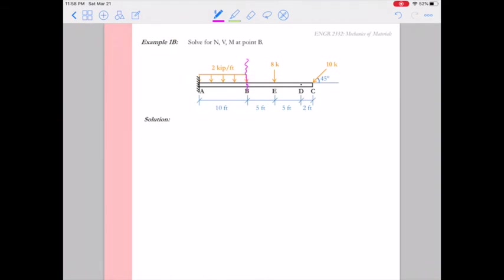So we're going to start just like last time, making a cut at the point of interest, which in this case is point B. And let's loop around to the right so we avoid those reactions at A again.